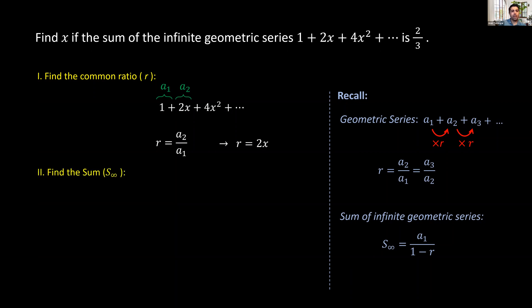Now use that along with the first term and the sum, which we know is two-thirds, and substitute into the sum formula. We get two-thirds equals 1 over 1 minus 2x.